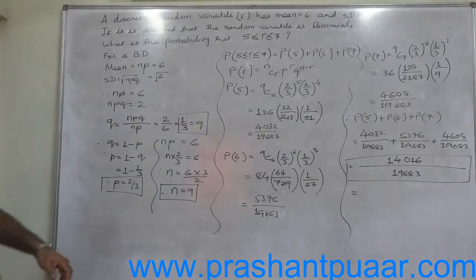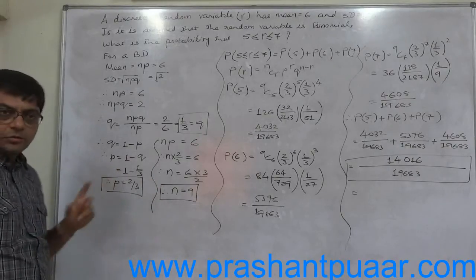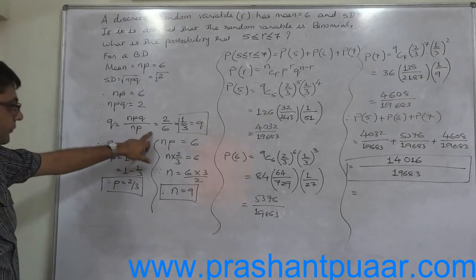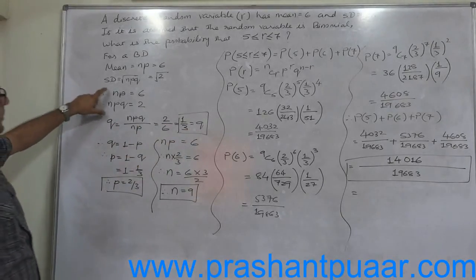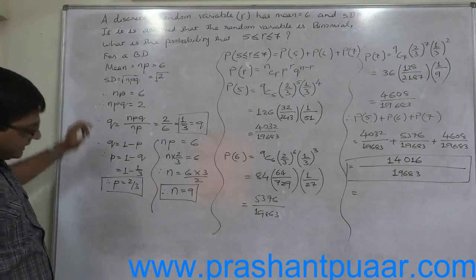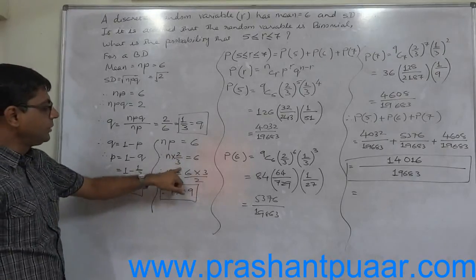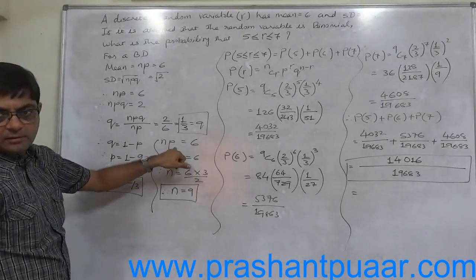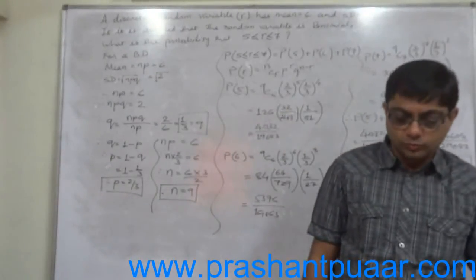Now you can convert it into a decimal. But the important thing in this case is first we have to find n, p, and q, and they can be found through this route only. First we can find q with the help of np and npq available from the question. Then p is 1 minus q, and then substitute the value of p into np. The result is n.